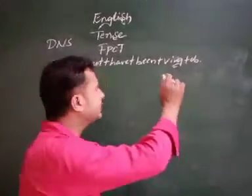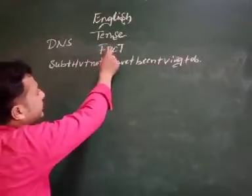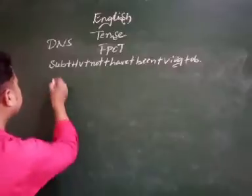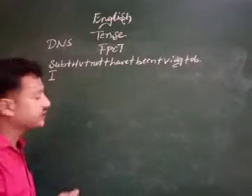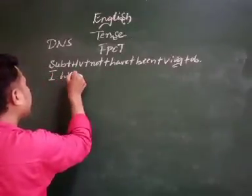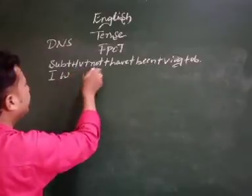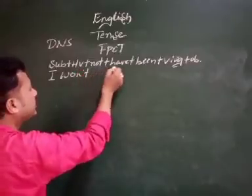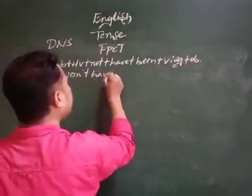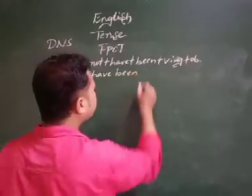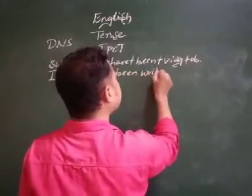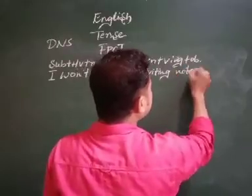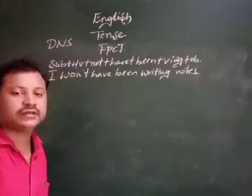This is the structure of the Future Perfect Continuous Tense. As per the structure, for 'I' we use modals. 'Will' plus 'not' gives 'won't'. So: I won't have been writing notes. I won't have been writing notes.